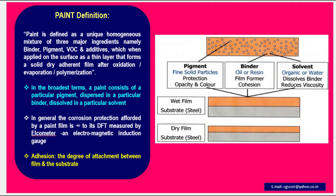On the right side you can see the pictorial depiction of pigment, binder, solvent, and wet film on a steel surface, and dry film on a steel substrate. Pigment is made up of fine solid particles, offers protection, has opacity and color, and imparts opacity and color to the paint.